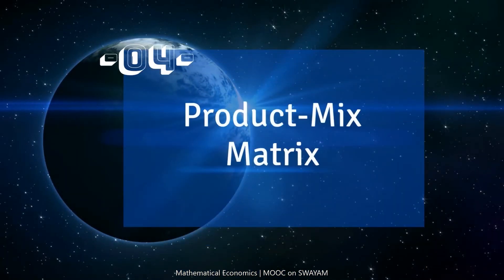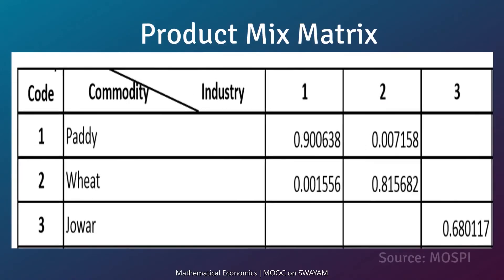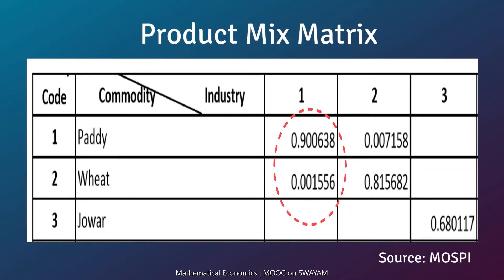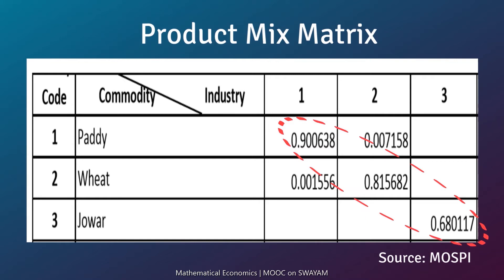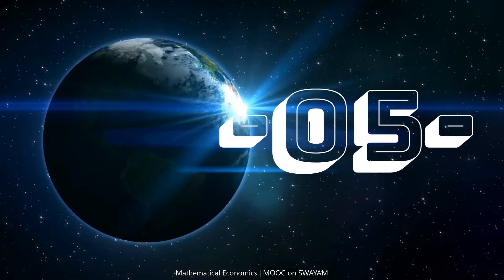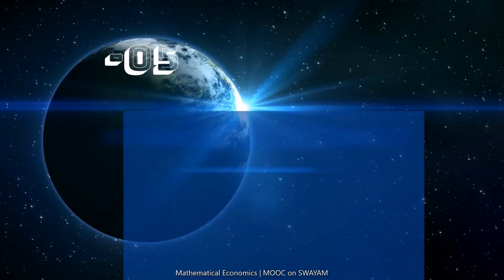In the product mix matrix, column entries show the proportions in which a particular industry produces various commodities. The diagonal elements give the proportion of the main product in the output of the industry, while the off-diagonal elements indicate the subsidiary products and by-products.